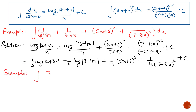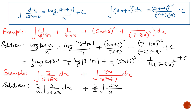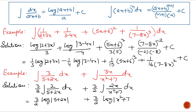Next example: integrate 3/(5 + 2x) with respect to x, and integrate 3x/(x² + 7) with respect to x. For the first part, the derivative of the denominator is 2, so take 3 common and divide by 2, multiply by 2. For the second part, the derivative of the denominator is 2x, so divide by 2 and multiply by 2, taking 3 common to get 2x/(x² + 7)dx. Since the derivative of the denominator is present in the numerator, the answers are (3/2)log|5 + 2x| + (3/2)log|x² + 7| + c.